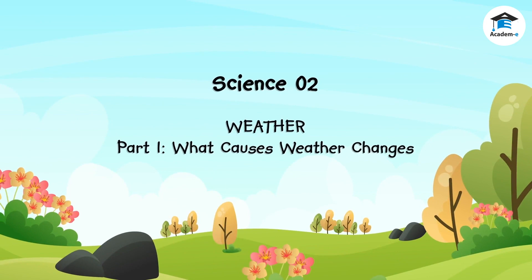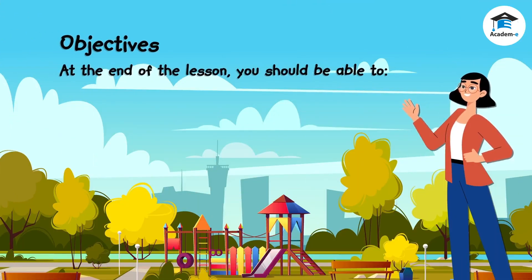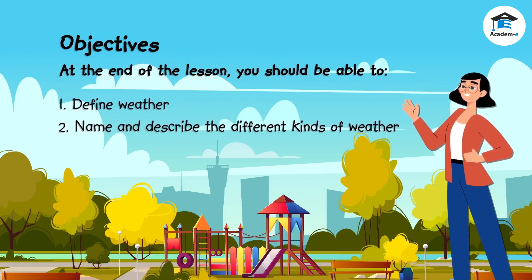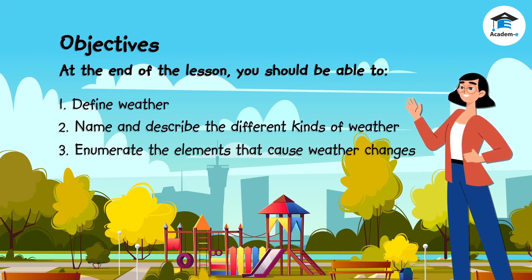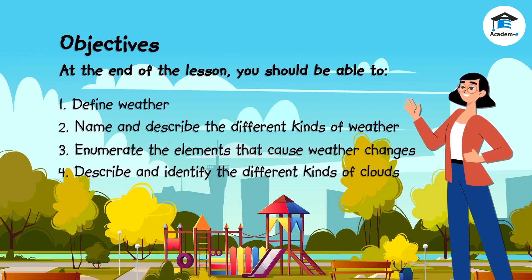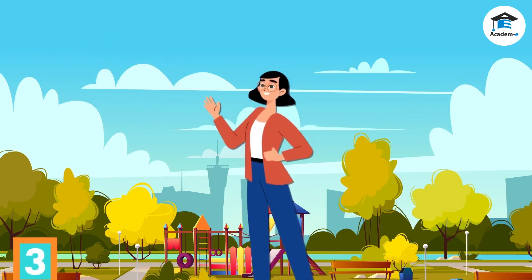Science 2, Weather Part 1: What Causes Weather Changes. Objectives: At the end of the lesson, you should be able to define weather, name and describe the different kinds of weather, enumerate the elements that cause weather changes, and describe and identify the different kinds of clouds.